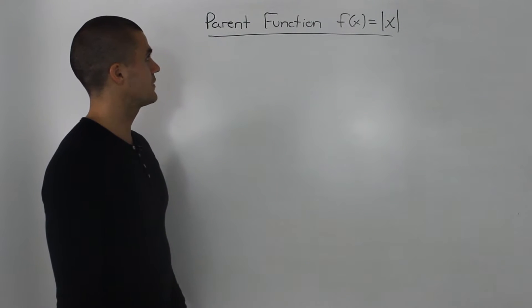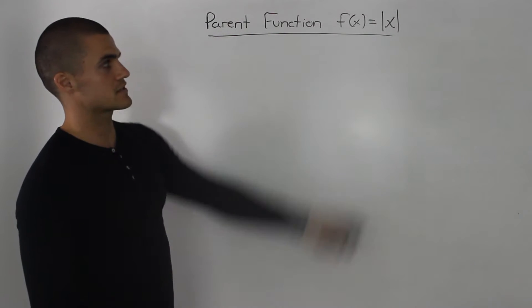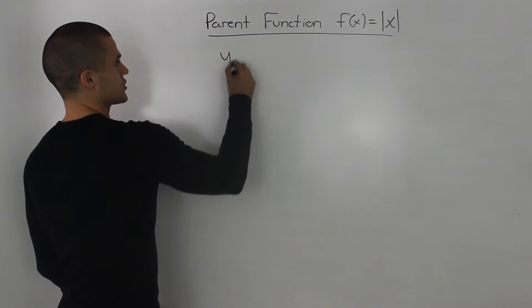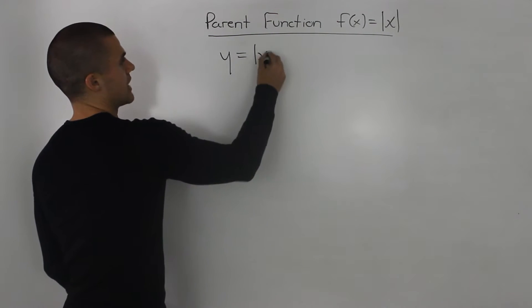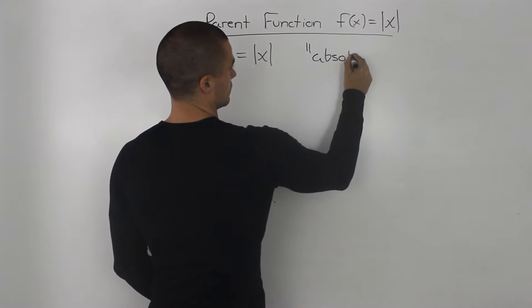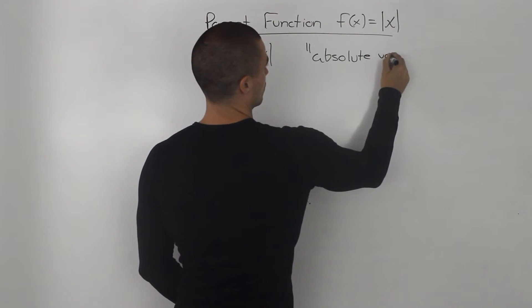The last parent function that we'll be dealing with in this section is f(x) equals the absolute value of x. This function can be rewritten as y equals the absolute value of x, and this is also called the absolute value function.